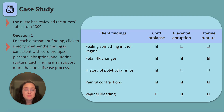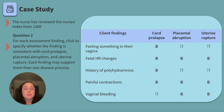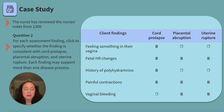History of polyhydramnios means too much amniotic fluid — the baby has a little too much space, which means a greater risk for the cord to slip by. Another mark for cord prolapse. Painful contractions can be found with any of these conditions, so we'll mark all three.